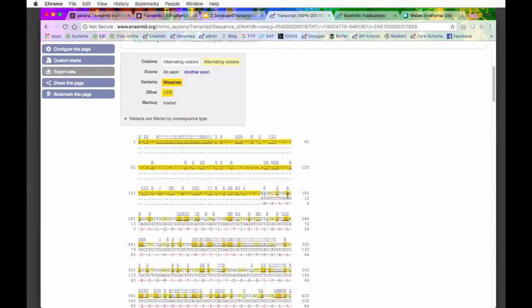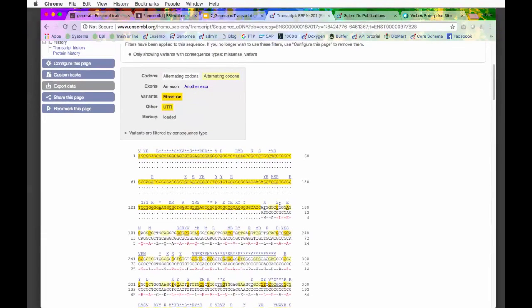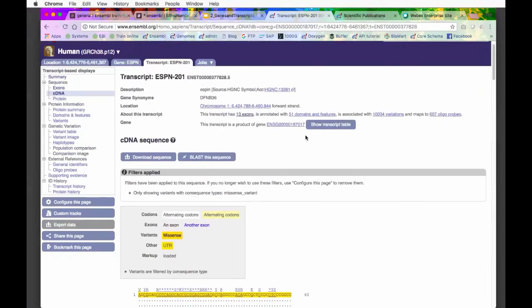You can see that we've got the codons highlighted. We've got this kind of white, yellow, white, yellow pattern. I added the missense variants to the earlier view, so they're showing in this view as well. Wherever we've got a missense variant, you can see that the amino acid is highlighted in red. I think this is really nice for thinking about variants in terms of both the genomic sequence and the amino acid sequence.